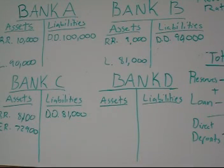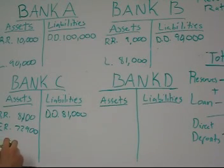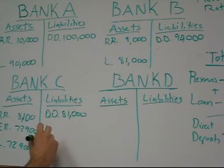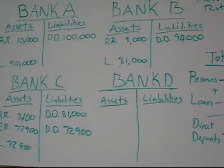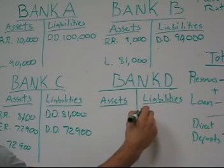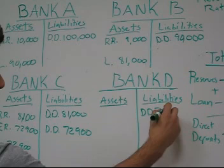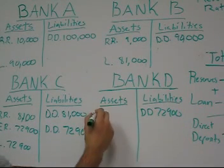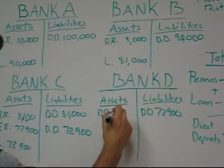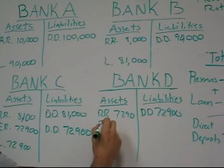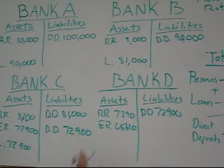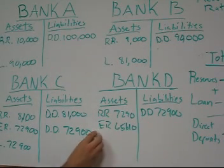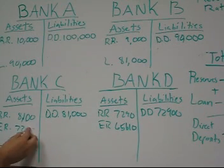That $72,900 isn't going to sit there either. A guy named Bob comes along — he's going to build his own golf course. He takes the $72,900 loan, gets a direct deposit, and pays the builders. The builder deposits the money in Bank D. After the 10% reserve ratio is applied, Bank D has an excess reserve of $65,610. The direct deposit is cleared once the check is paid off.